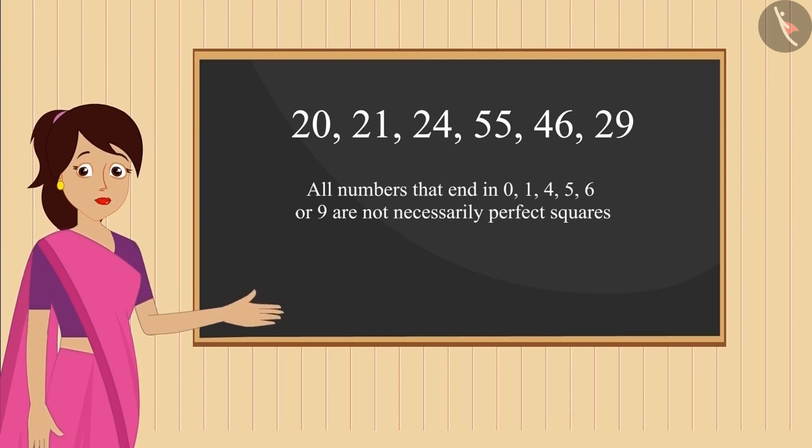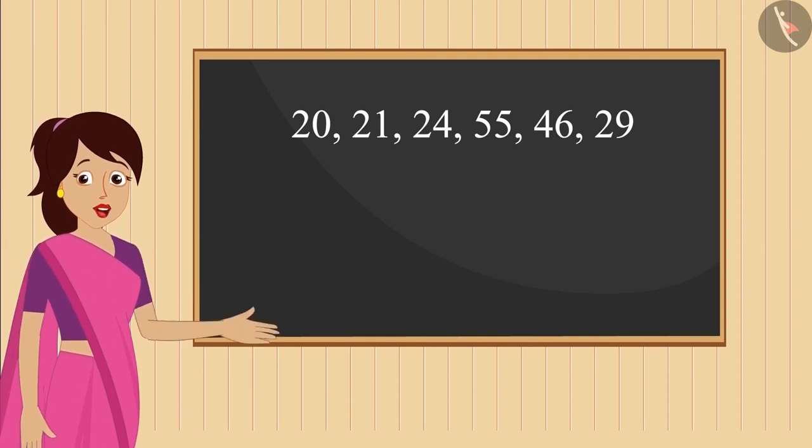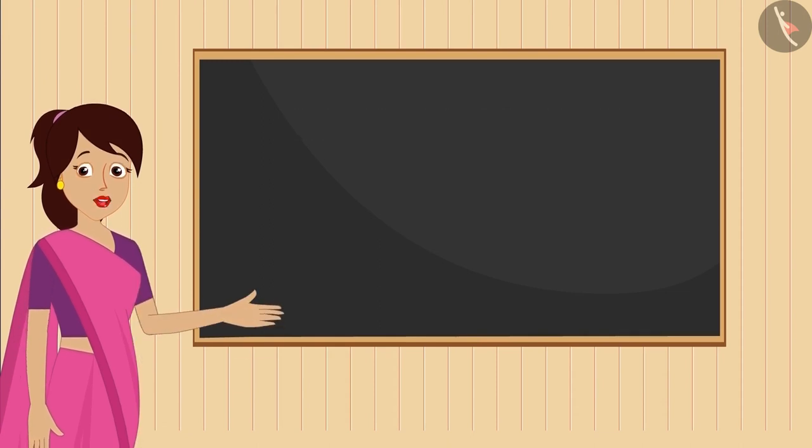That is, we can say that all the numbers that have these numbers in their units place are not necessarily perfect squares.